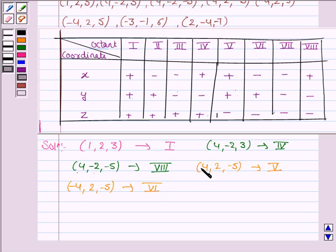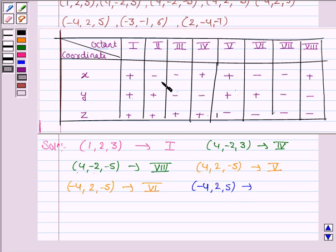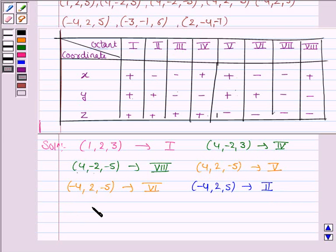The next point given to us is (−4, 2, 5). Here, y and z coordinates are positive but x is negative. In the second octant, x is negative but y and z are positive. Looking at this table, you can easily see which point lies in which octant by looking at their signs.